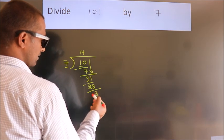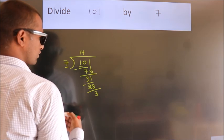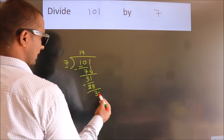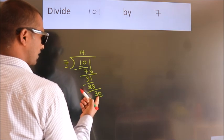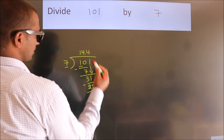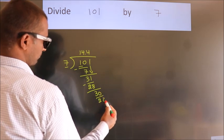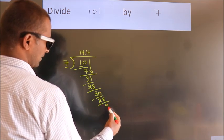After this, there are no more numbers to bring down. So what we do is put a dot and take 0, giving us 30. Now we subtract and get 2.